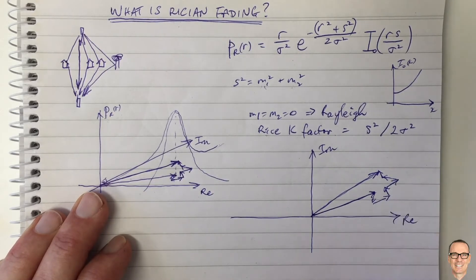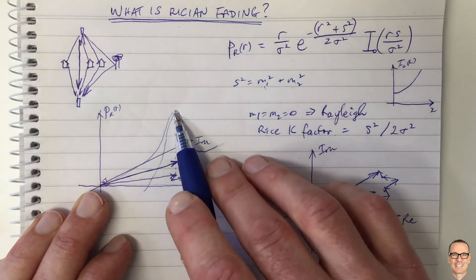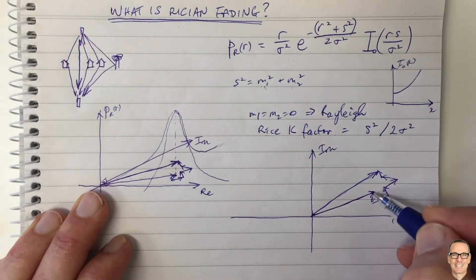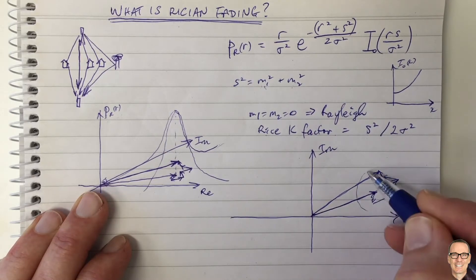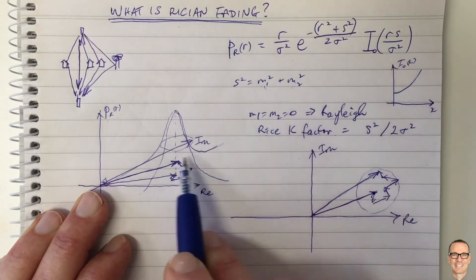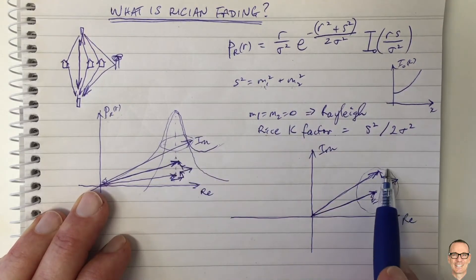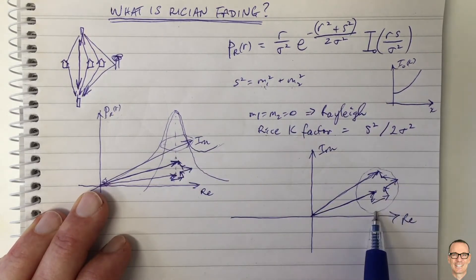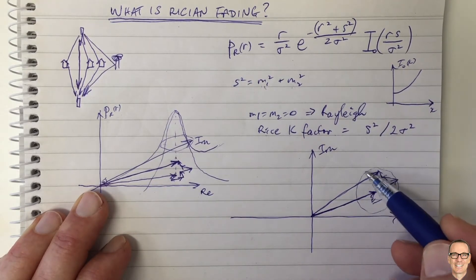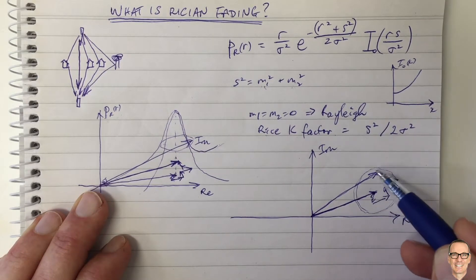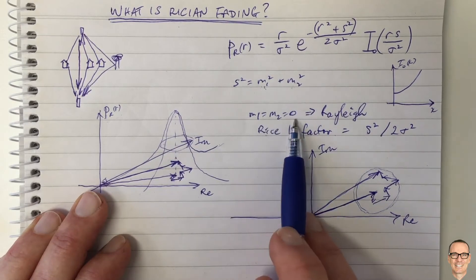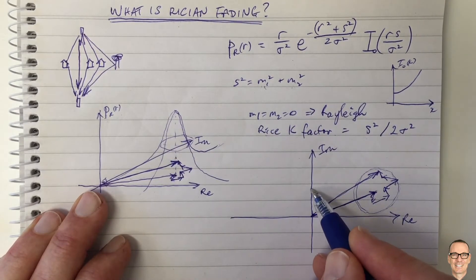So in this case, the Gaussian mountain here, if we're looking down on the top, is now centered on this dominant path. So if I drew a sort of a circle around here of equal probability, maybe a contour line around this Gaussian shape here, and I'm looking down on the top of it now, there's that contour line. And so what we can see is if this was the dominant amplitude and phase, then there will be equal probability of getting amplitudes on this circle here. Now let's look back: if m1 and m2 equals zero, we get Rayleigh.